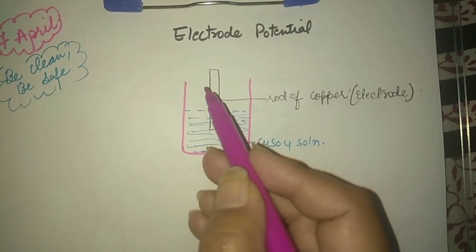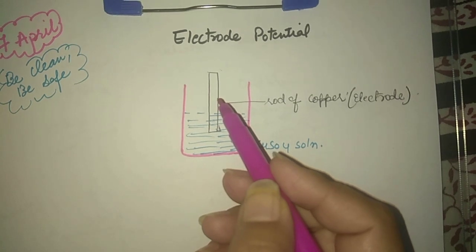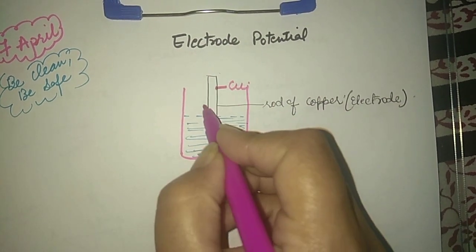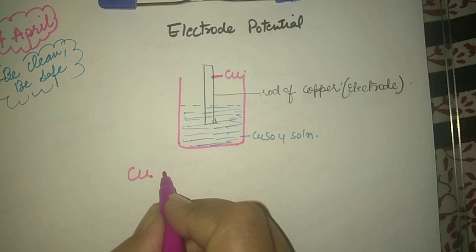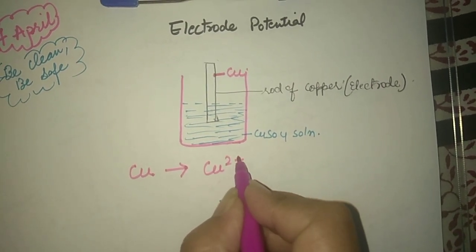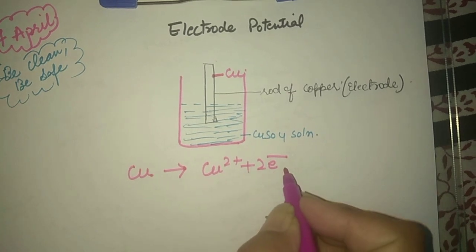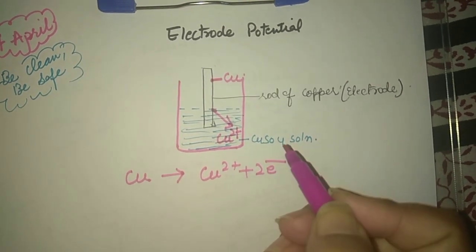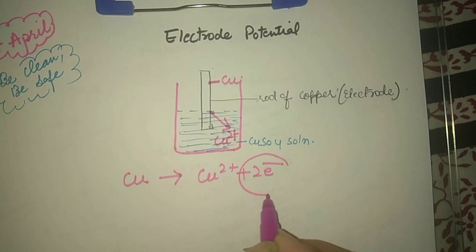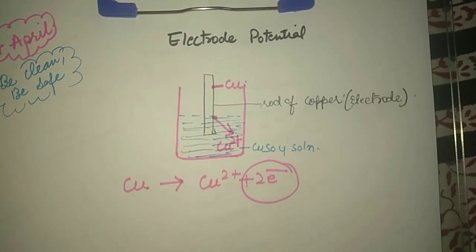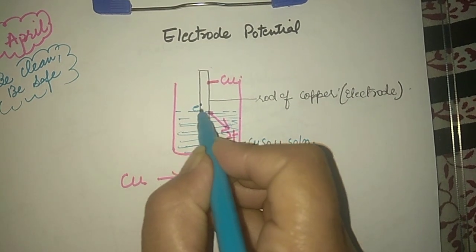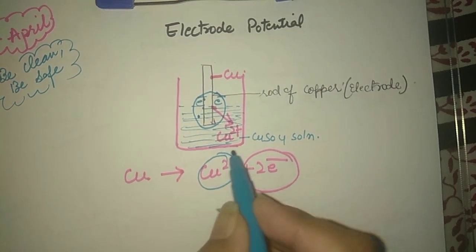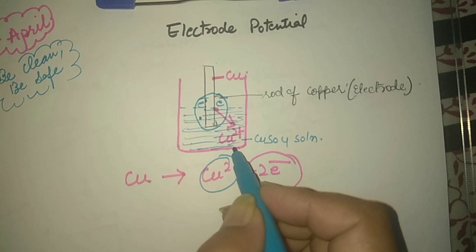The copper atoms have a tendency to lose electrons to form Cu2+ ions. This copper electrode will lose electrons to form Cu2+ ions. These Cu2+ ions will go into solution, and the two electrons will accumulate and deposit on this electrode. These Cu2+ ions will move into the solution.